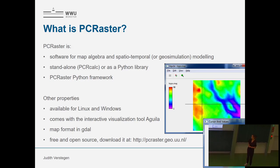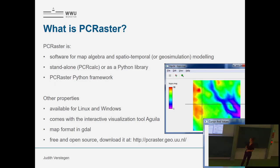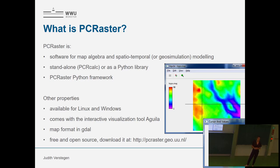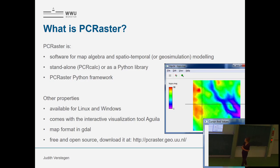My tutorial this afternoon is about PCRaster Python. PCRaster has existed since the 1990s for map algebra and spatial-temporal modelling. It previously worked as a standalone language called PCRcalc, but for the past ten years there's been a Python library, which is convenient for using other Python libraries. The PCRaster Python framework includes three frameworks: a dynamic modelling framework, a stochastic modelling framework for Monte Carlo analysis, and a data assimilation framework for Bayesian data assimilation.